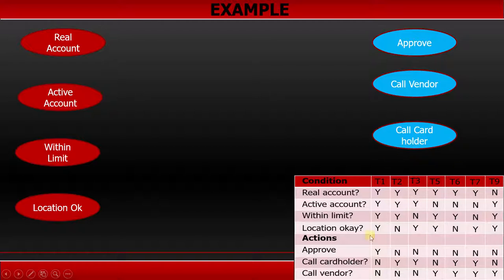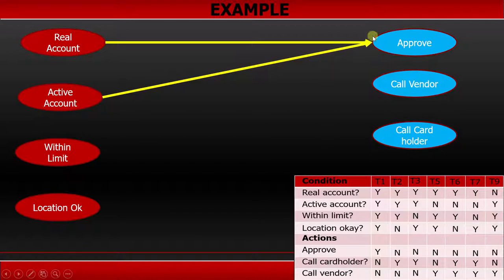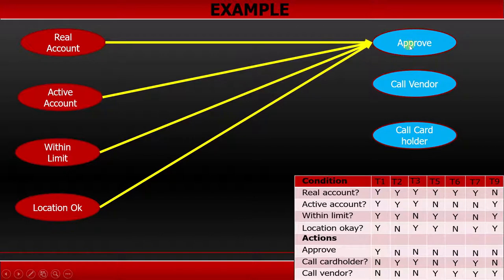Now we have to analyze this decision table and provide the logic here. What does that mean? That means, if you see test case 1, if all of these conditions are yes, then you will approve the transaction. That means, if your account is real, if your account is active and if the money is within limit and location is fine, then you are going to approve the transaction. So this is going to be your first combination.